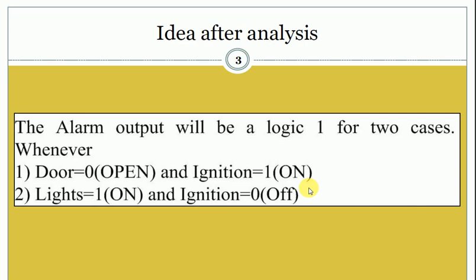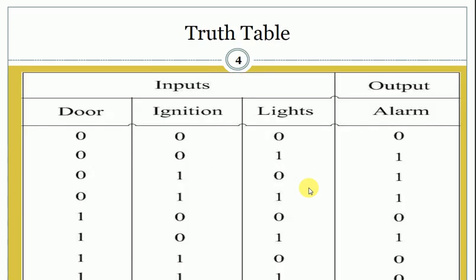Door open represents the value zero. Now proceed to the truth table. When we proceed to the truth table, we see that there are three input variables. Since there are three input variables, there will be eight input combinations. Depending on the eight input combinations and the two conditions given in the problem statement, we will get the output of the alarm.